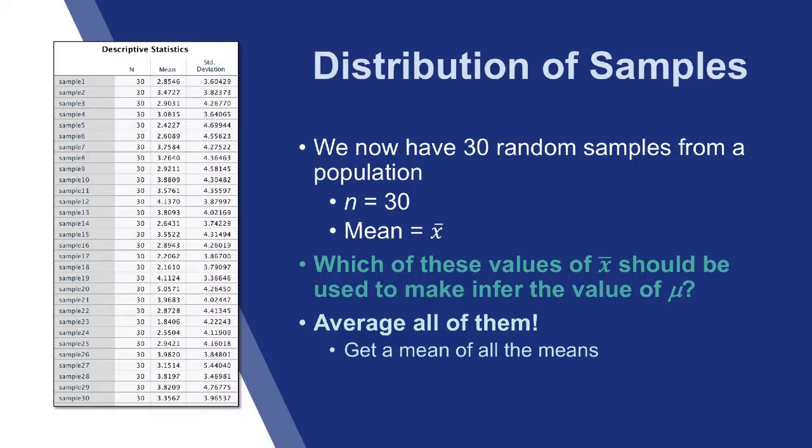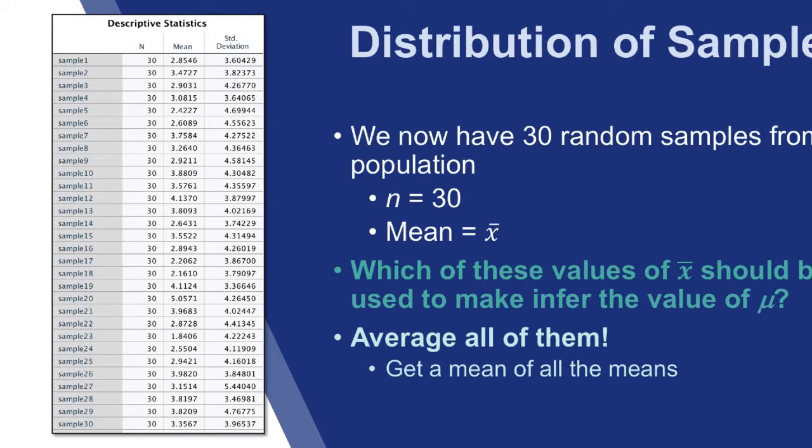All 30 students in the class repeat this experiment. We now have 30 random samples from our population, each with a sample size of 30 and each with a mean. But those means are all different. Which of these values should we use to infer the value of μ, the population mean? The answer is we're going to average all of them to get a mean of all the means.